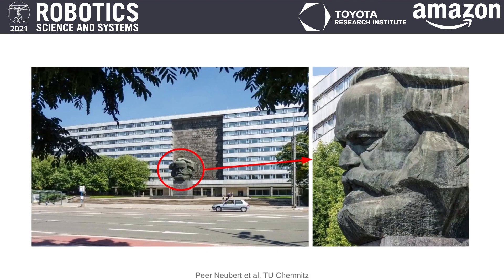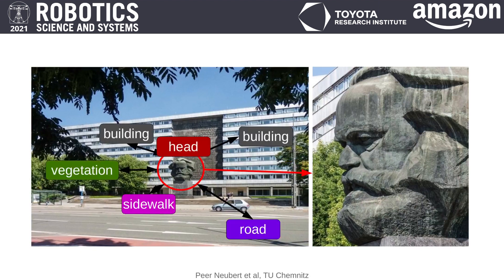You can very easily recognize that you are in Chemnitz if you see a gigantic head without a torso. There is no upper body, but this gigantic head is on top of a sidewalk and in front of a building. That is a constellation of semantic entities that is quite unique for the city of Chemnitz and can serve as a cue for localization. However, such constellations of semantic entities can also be useful for place recognition with landmarks less unique than a seven-meter tall head of Karl Marx.